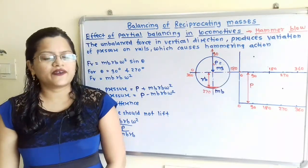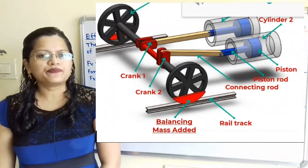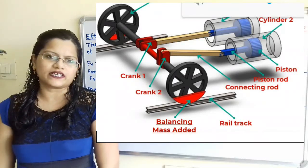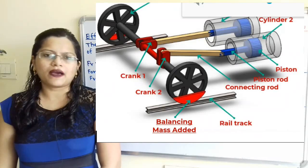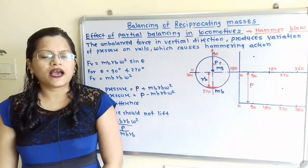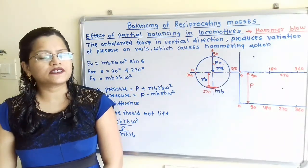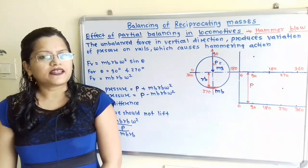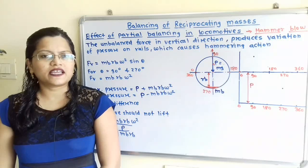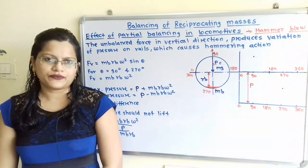Let us understand the effect of partial balancing in locomotives. If we observe the diagram, a balancing mass is provided on the wheels and the wheels are moving on the rails. Due to this balancing mass, there are two components: the horizontal component MbRb·ω²·cosθ and the vertical component MbRb·ω²·sinθ. The partial balancing effect known as hammer blow is due to the vertical component MbRb·ω²·sinθ.